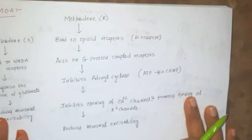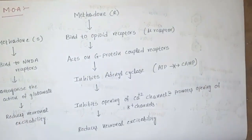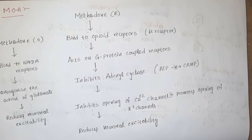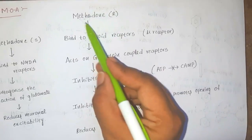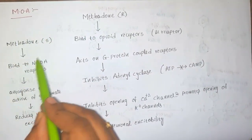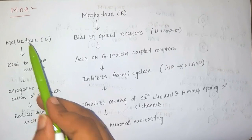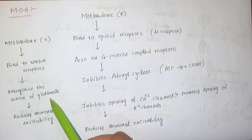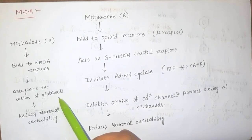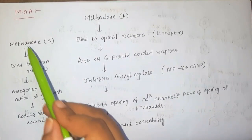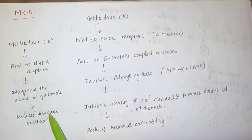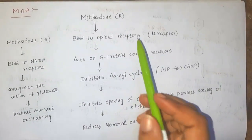Methadone is available in racemic mixture form — both levo form and dextro form. R means levo form; S means dextro form. The dextro form of methadone binds to the NMDA receptor and antagonizes the action of glutamate, which is an excitatory neurotransmitter. Methadone antagonizes the glutamate receptors and finally reduces neuronal excitability.